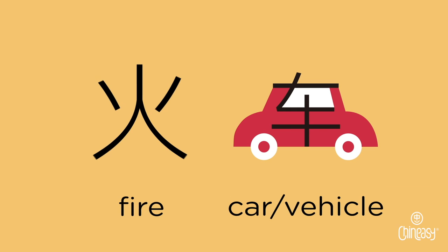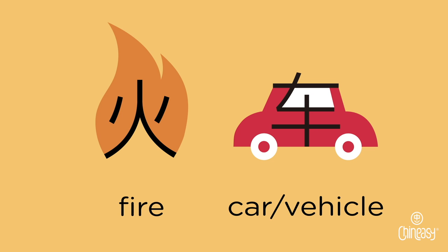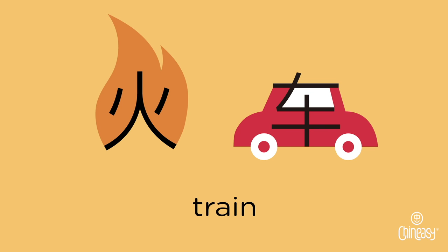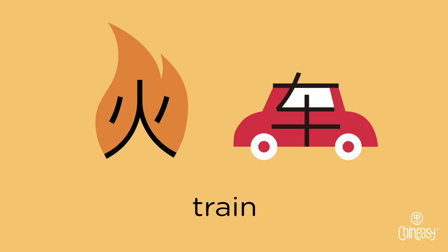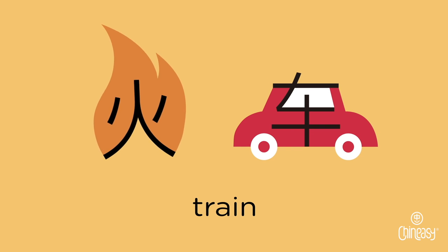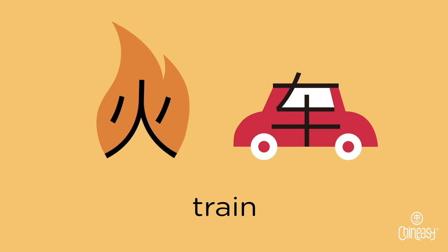What about a fire vehicle? It's a train — 火车. When the first full-scaled working train was introduced, it was powered by steam and fire.